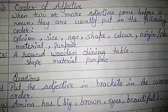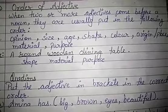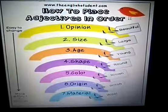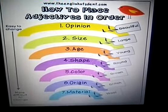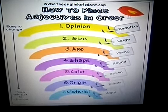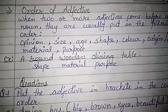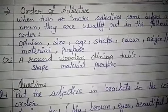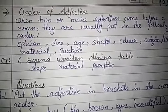Now let's see the order of adjectives. When two or more adjectives come before a noun, they are usually put in the following order: opinion, size, age, shape, color, origin, and material. For example: 'a round wooden dining table.' Here, round represents shape, wooden represents material, and dining represents purpose.